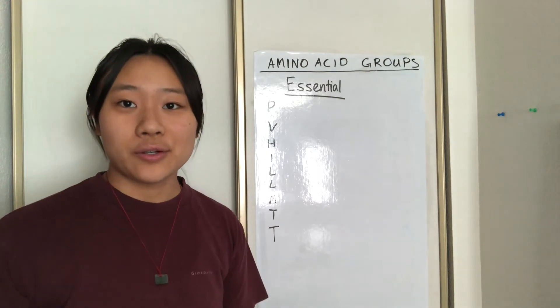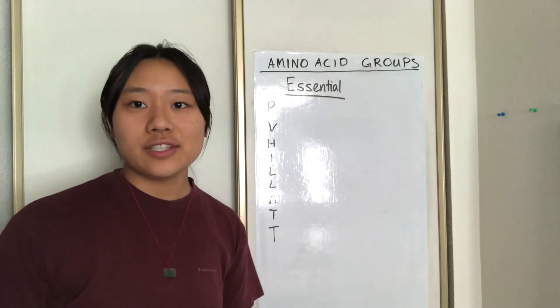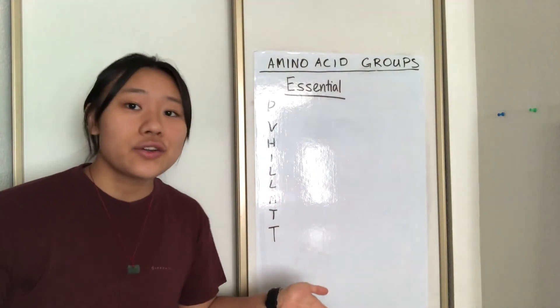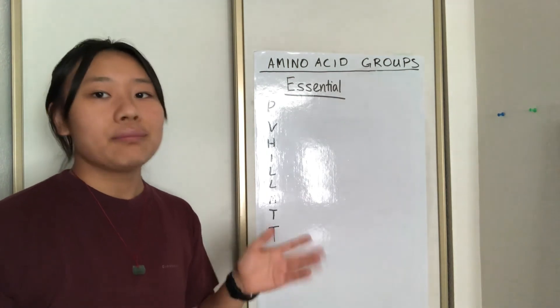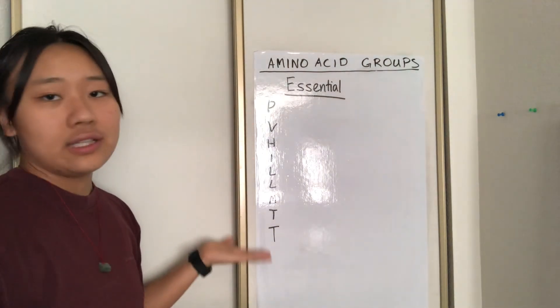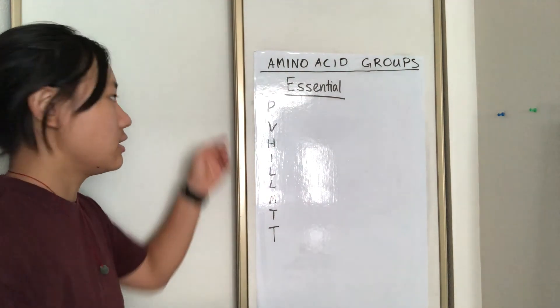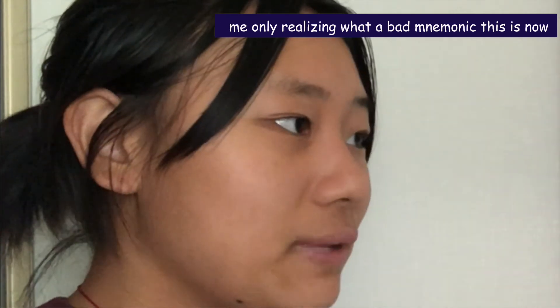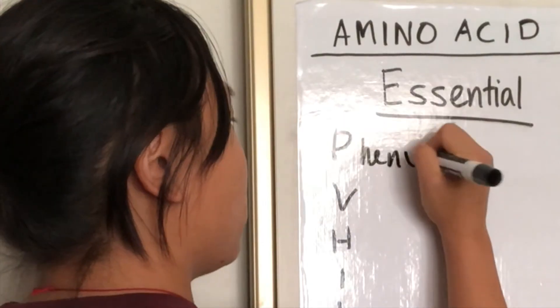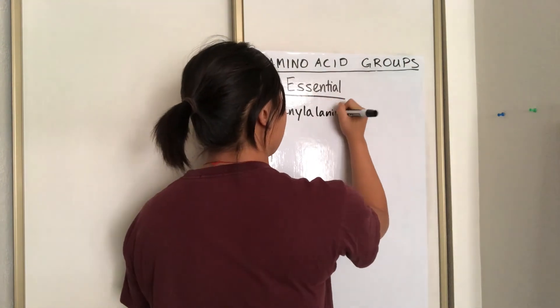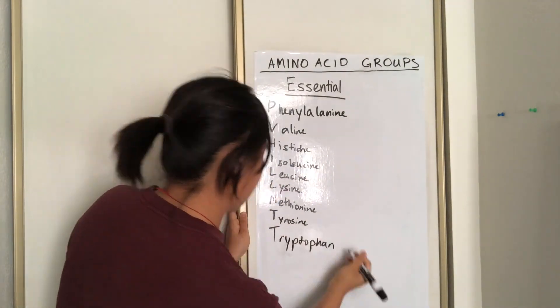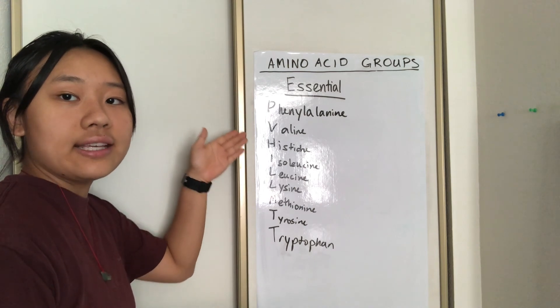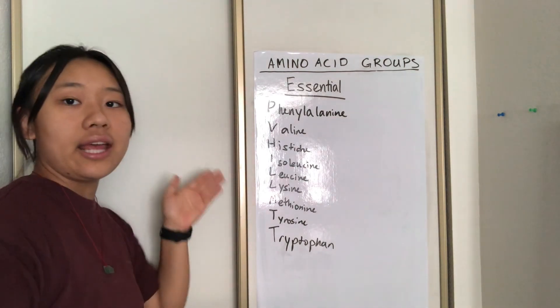There's also a term called essential amino acids. These are amino acids you need to get from your diet because the body cannot produce them — you need to get them from protein sources such as meat, poultry, eggs, and some vegetables. I use the mnemonic 'PV HELMET' to remember the nine essential amino acids. They are: phenylalanine, valine, histidine, isoleucine, leucine, lysine, methionine, tyrosine, and tryptophan.